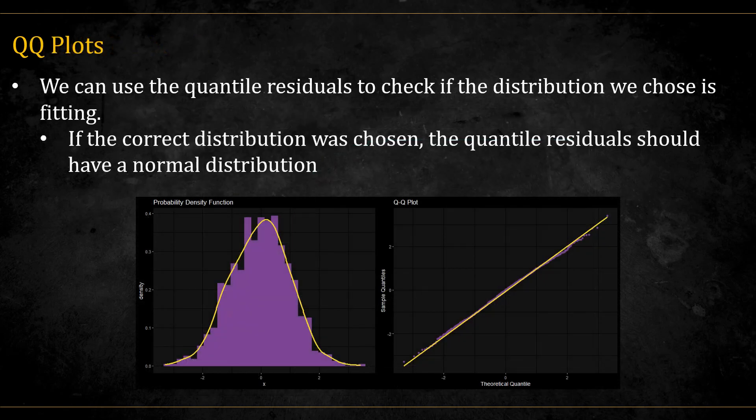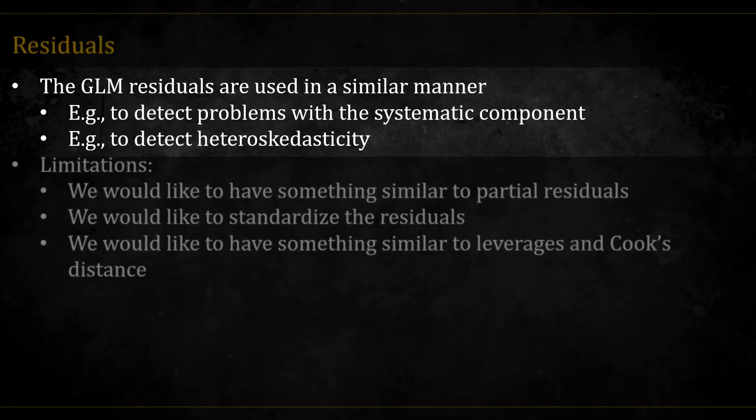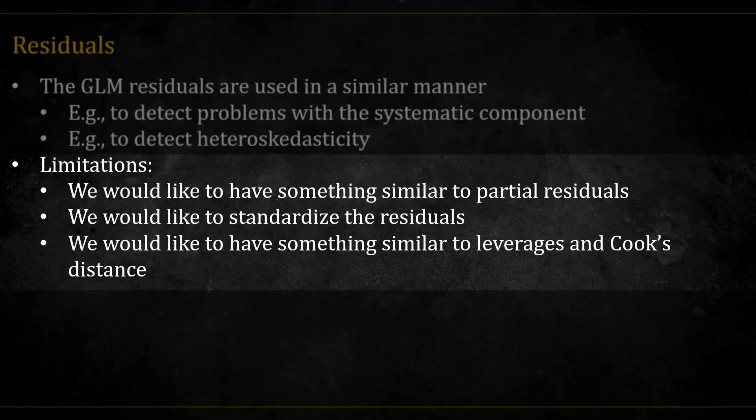We can use the quantile residuals to check if the GLM distribution we chose is correct. If we chose the correct distribution, then the quantile residuals should follow a normal distribution. We can also use the GLM residuals in a similar manner to how we use the LM residuals. That is, to detect problems in the systematic component, for example, the existence of trends, and to detect problems in the random component, for example, heteroscedasticity. But there are a few limitations.